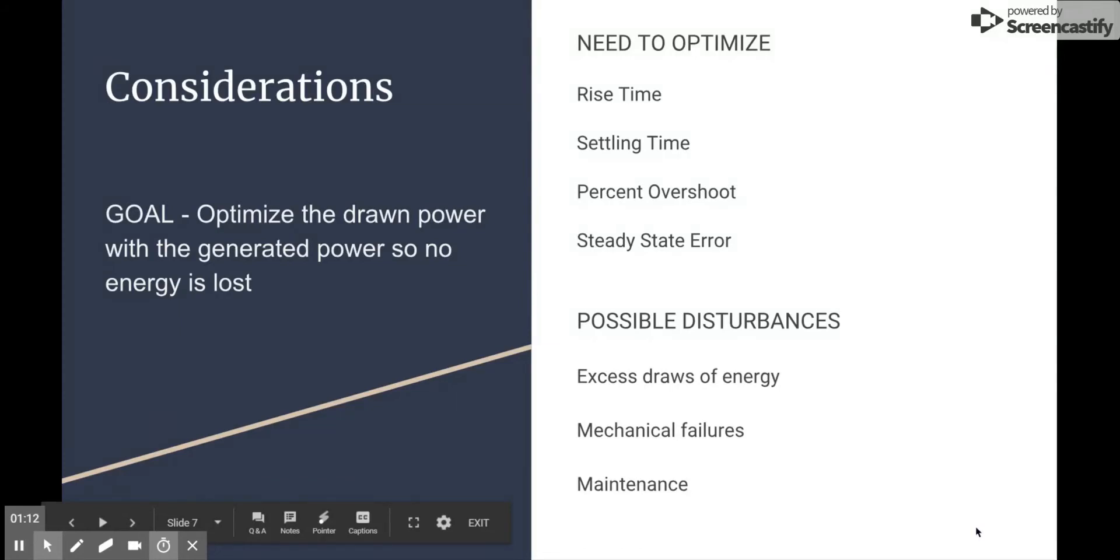Now that we know a little bit about our open loop system, we want to think about what we can optimize with control. Some of these things are the rise time, settling time, percent overshoot, and steady state error, which will all make our system respond fast and accurately to the input.